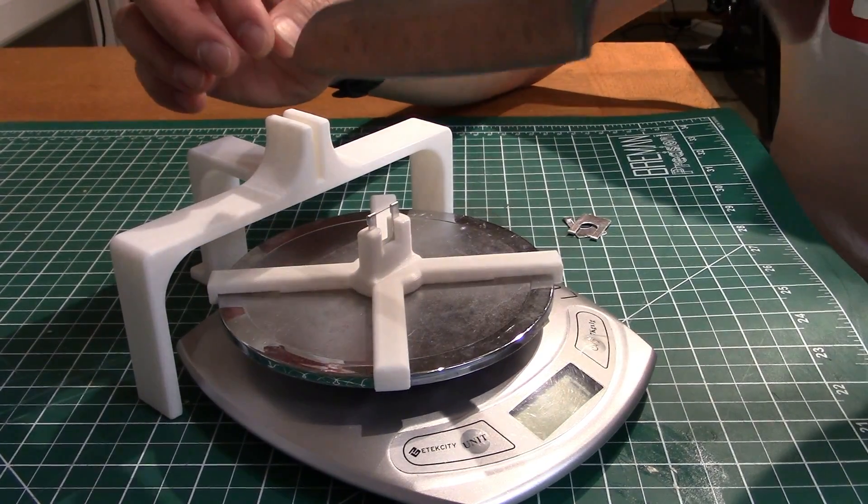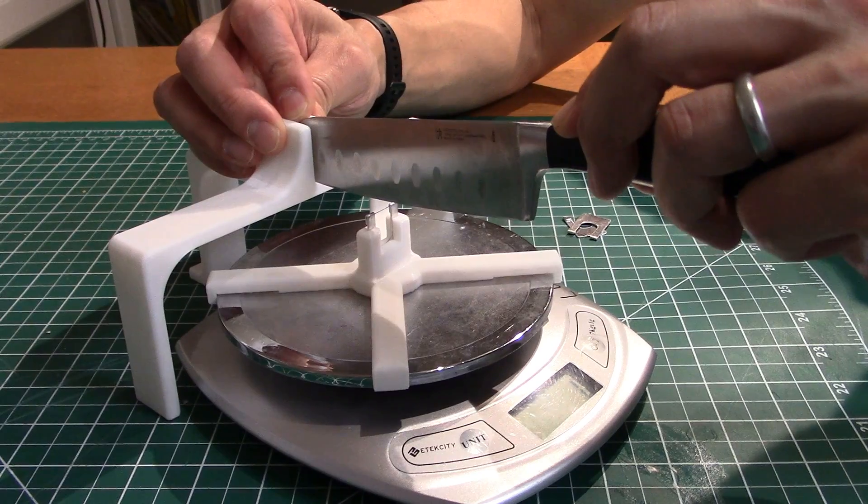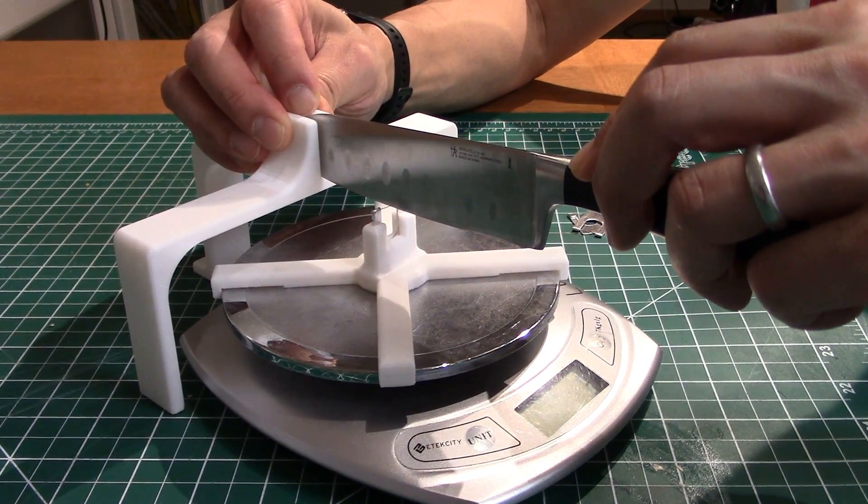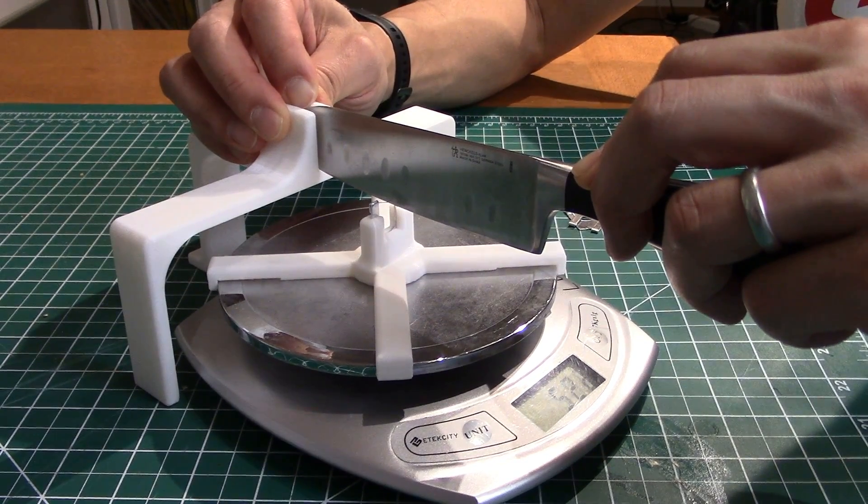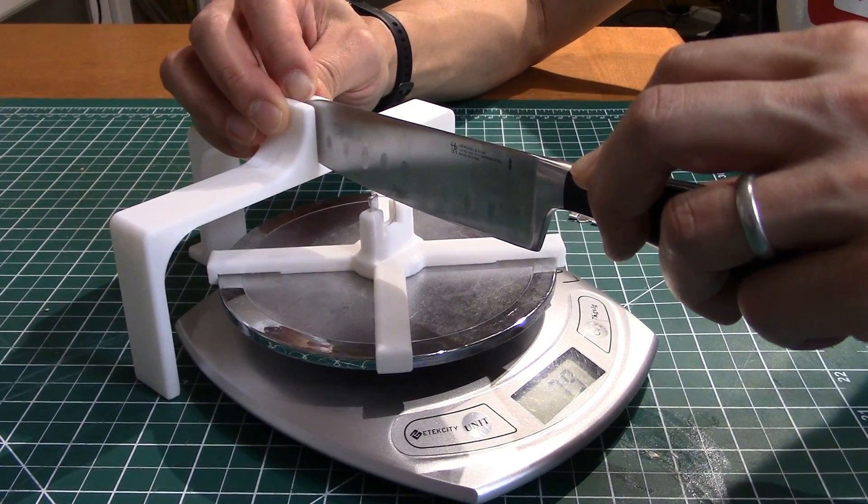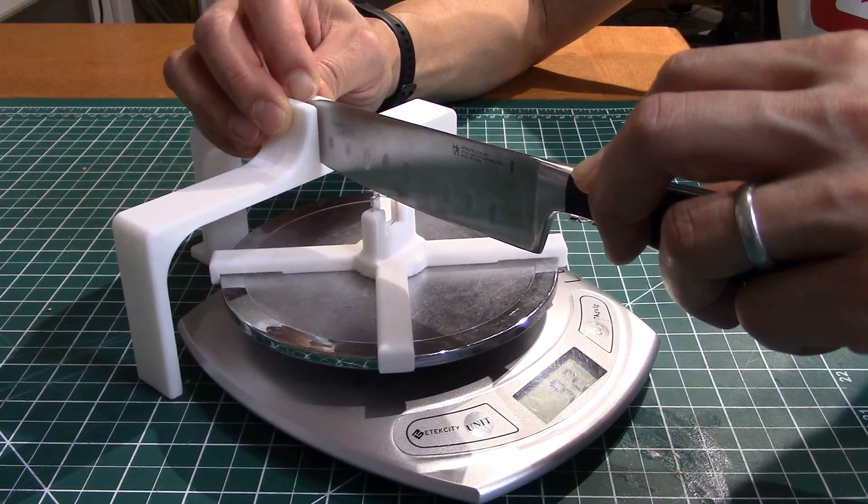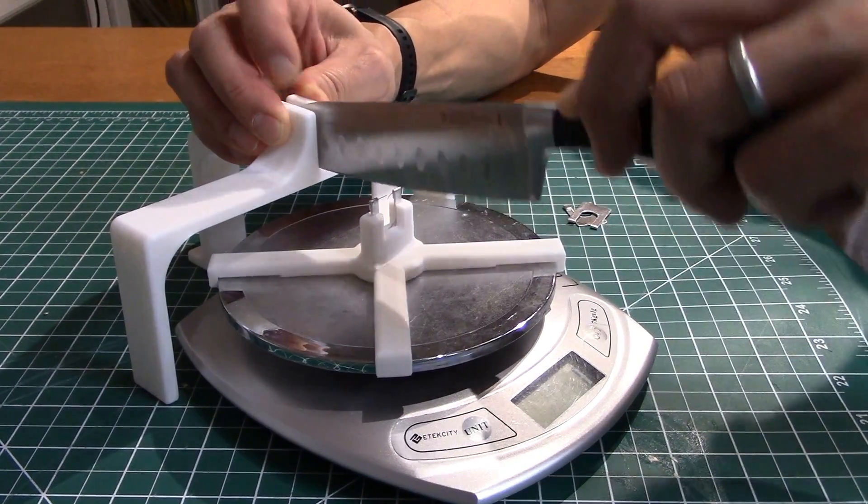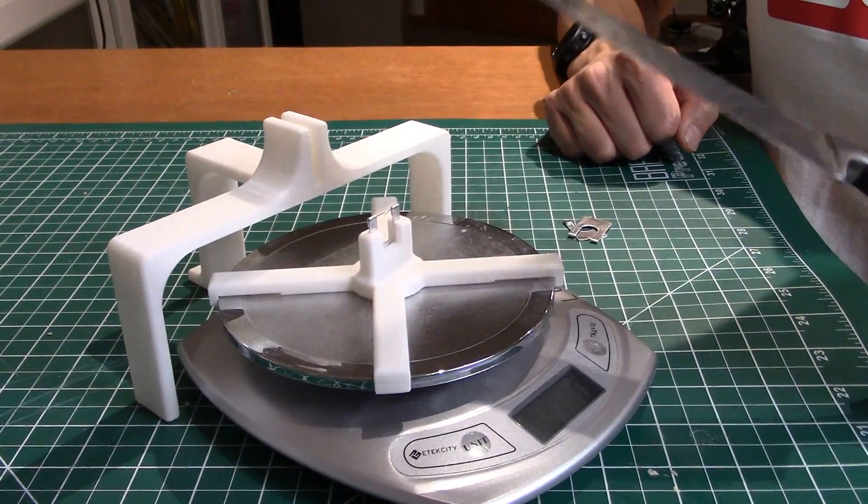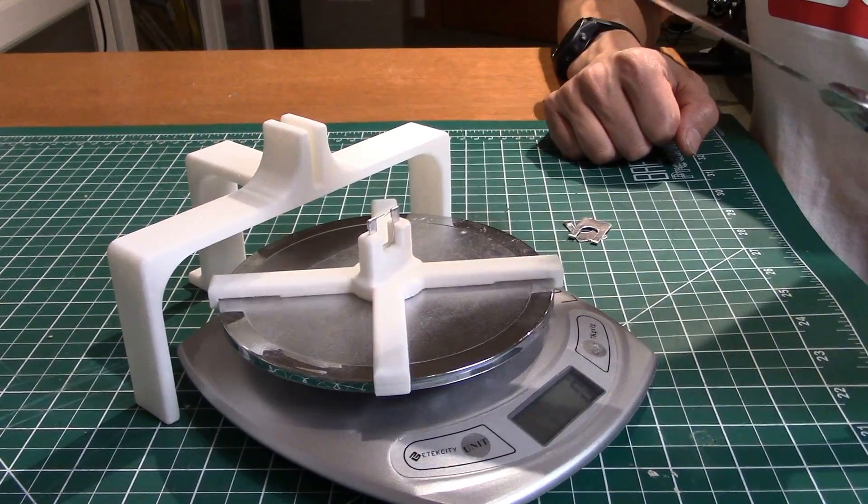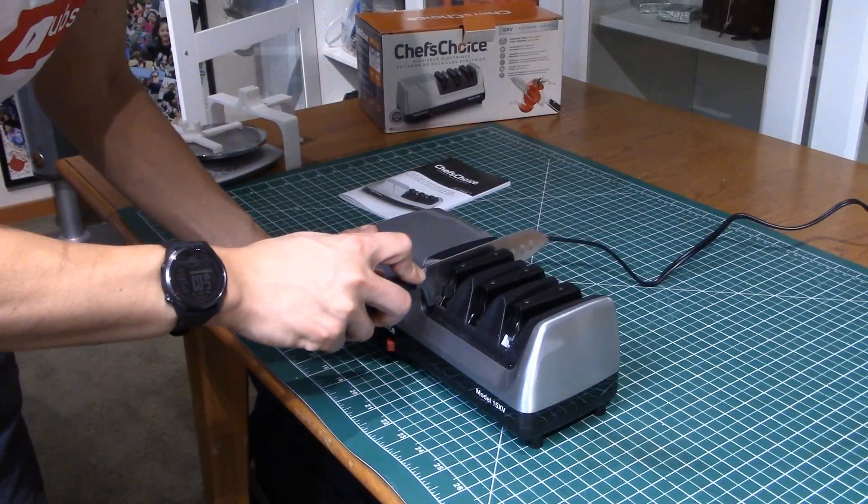So let's do one more just to kind of get a wide range of numbers and see if we can get a better idea. Okay, so here we go. Now let's do it again, pressing down: 500, 600, 700, 800, 900, 1,000, 1,100. Okay, 1,100. So long story short, we got a kind of a large range of numbers, but we got a rough idea. Let's now go ahead and sharpen this guy and see if that changes anything.